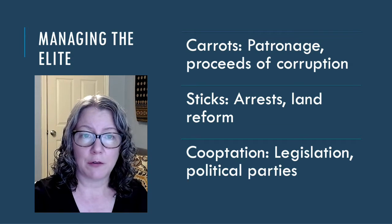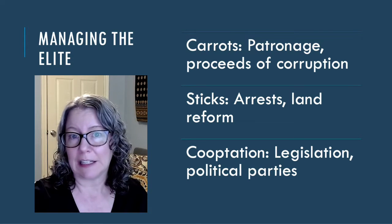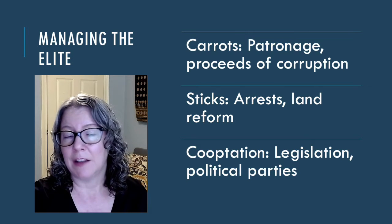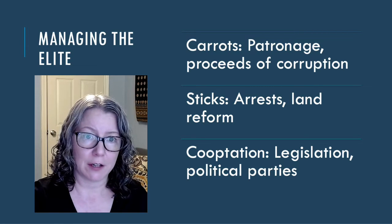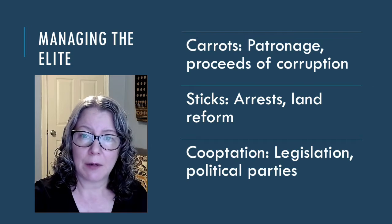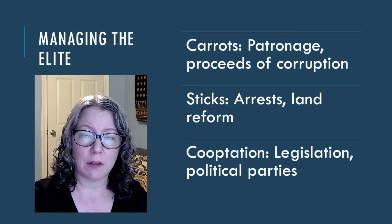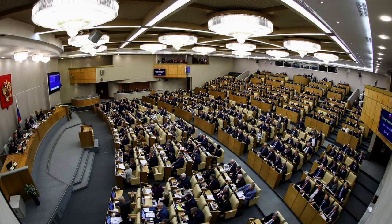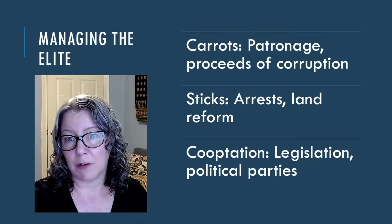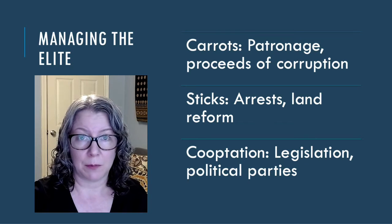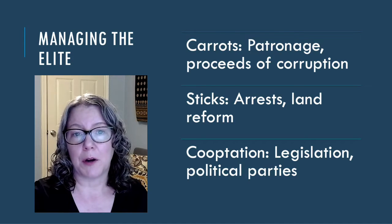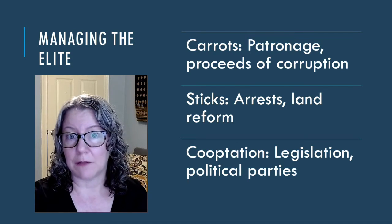Finally, dictators also manage their selectorates through institutions. Parliaments under authoritarianism do not represent the interests of the general public — they are not chosen through free and fair elections — but they do allow elites to debate legislation with varying degrees of freedom. By managing which elites are allowed a voice in policy and which are banned from political participation, a dictator is able to play factions against each other and ensure that everyone owes their position to him. Political parties serve a similar role: that of cooptation.